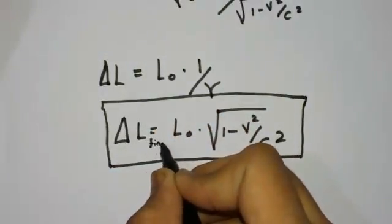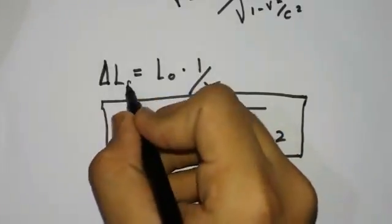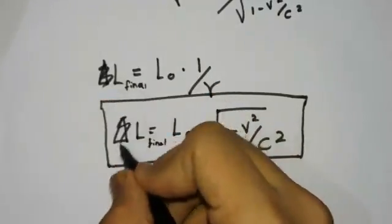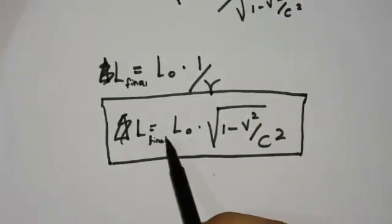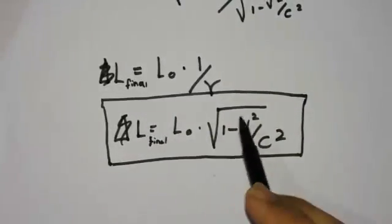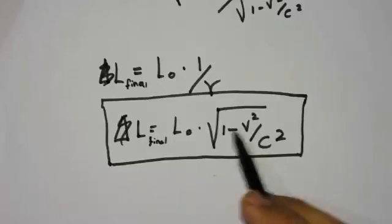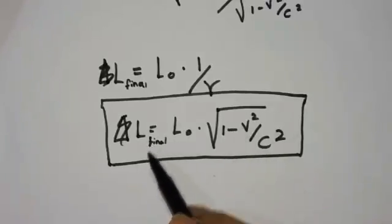Or here we should not say it's change in length, we can say it's L final. In every case, L final equals to L initial times 1 over gamma, that is L final equals to L initial times square root of 1 minus v squared over c squared. All becomes 0, so L final equals to 0.